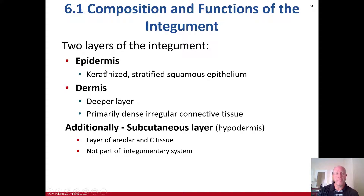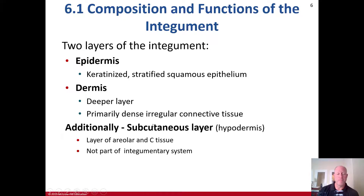There are two layers of the integument. The epidermis is the most superficial layer of the skin; it's keratinized stratified squamous epithelium. The dermis is a deeper layer — it's primarily dense, irregular connective tissue. Additionally, the subcutaneous layer below it, which is not technically part of the integument, is referred to as the hypodermis. It's a layer of areolar connective tissue and is not part of the integumentary system.